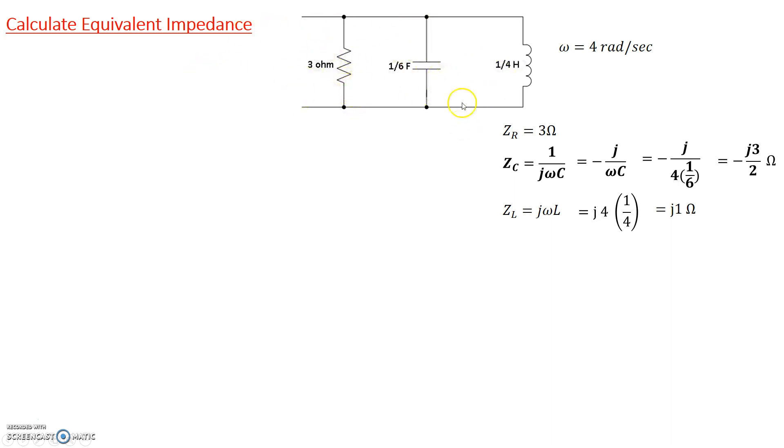These three elements are in parallel. Since they're in parallel, the equivalent impedance seen from here is given by this formula. 1 over the equivalent impedance equals the sum of the reciprocals of the individual impedances. So 1 over Z_eq is 1/3 (the 3 ohm resistor), plus 1 over negative j 3/2 (the capacitor), plus 1 over j 1 (the inductor).